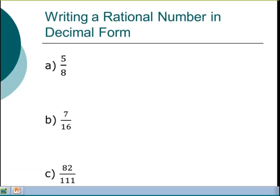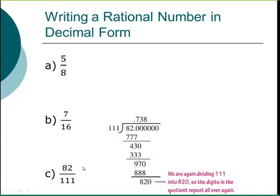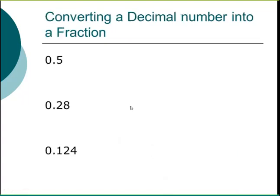For part C, dividing by 11, you'll see the long division produces digits 7, 3, 8 — and then when you keep bringing down zeros, the sequence 738 repeats over and over forever. This is what happens with rational numbers: the decimal either terminates or repeats. You can use a calculator for these division problems.